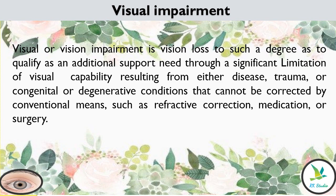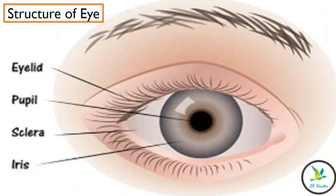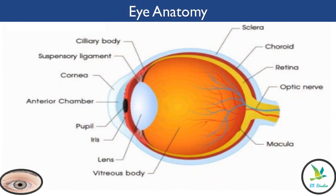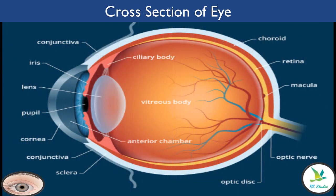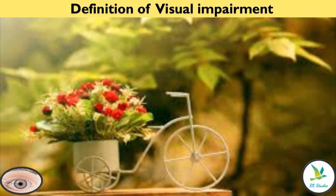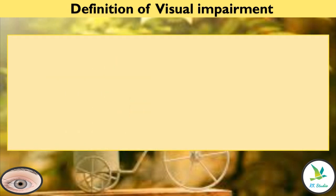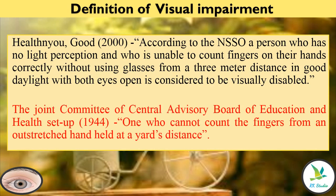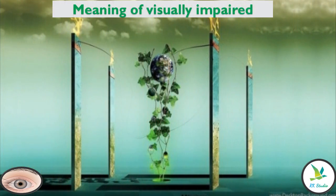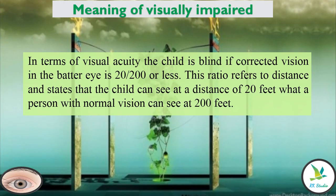Visual impairment. Structure of the eye and eye anatomy. Cross section vision of the eye. The function related to visual impairment. Meaning of visual impairment.